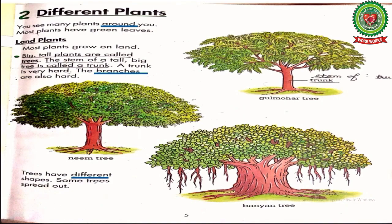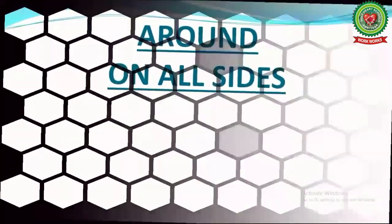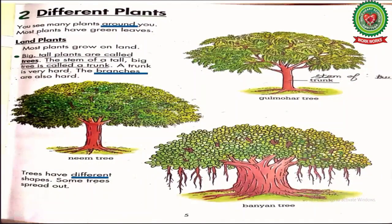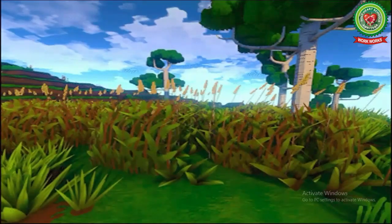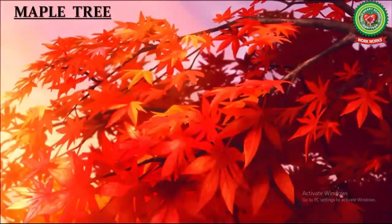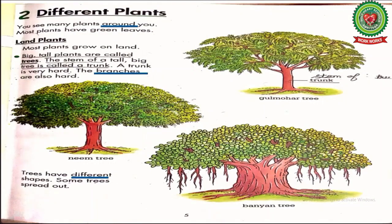Now children, it's time for reading. Open your book page 5, Lesson 2: Different Plants. You see many plants around you. Underline the word 'around' and write down its meaning: on all sides. As we see daily, different types of plants are in our surroundings. Some plants are big and some are small. Most plants have green leaves due to the presence of the pigment chlorophyll. Only a few plants are not green in color, like the maple tree.